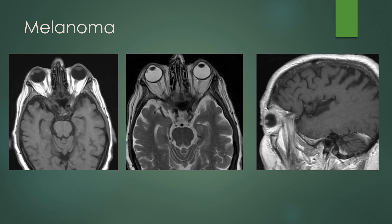You can get melanoma to the uvea. In this case, you see a hyperintense T1 signal mass lateral to the lens along the edge of the iris. On T2 it is hypointense compared to the vitreous, but not quite as dark as the lens. Melanin is intrinsically hyperintense on T1. So if you see a hyperintense T1 signal mass in the orbit, don't forget that melanoma can go to the globe itself.